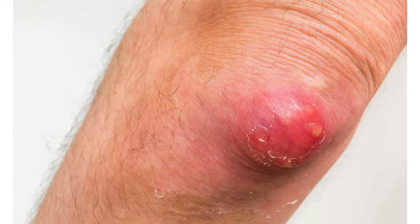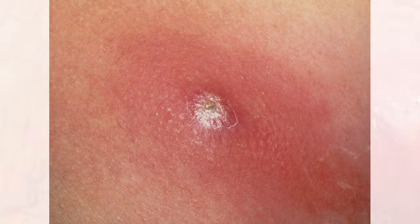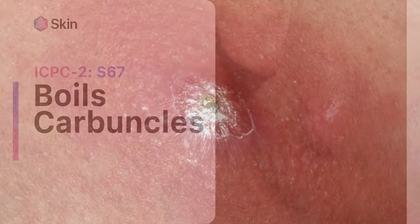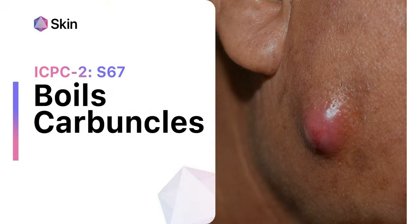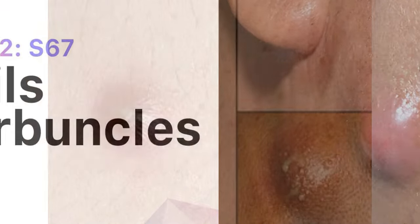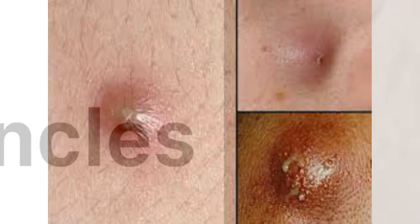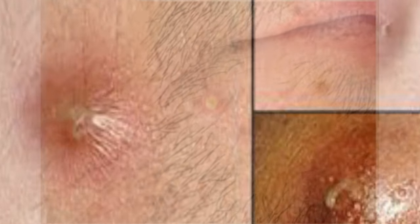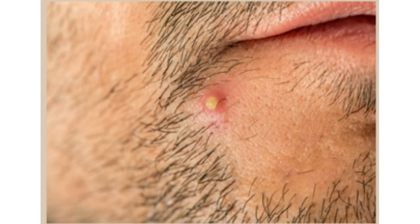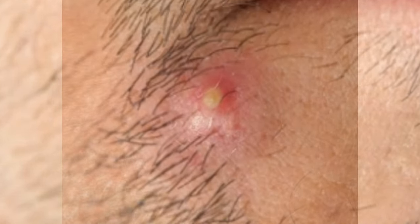Boils are usually caused by the bacteria Staphylococcus aureus. These painful skin abscesses result from bacteria infecting a hair follicle. They commonly occur on the face, neck, armpits, buttocks, and thighs, but can appear anywhere on your body.